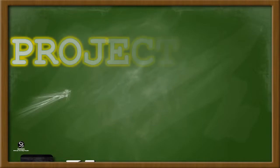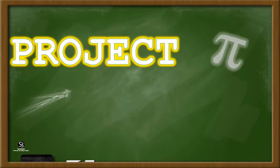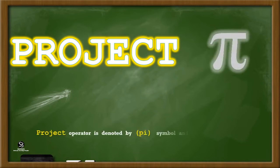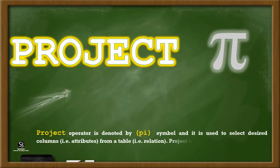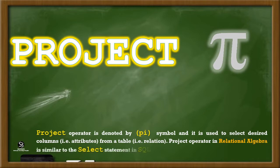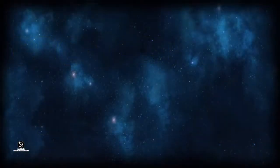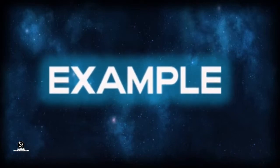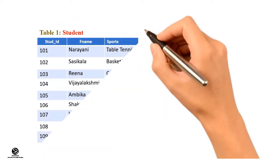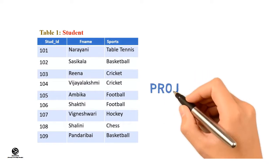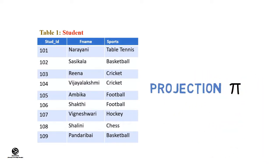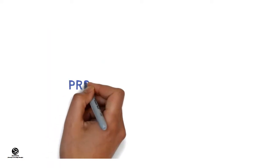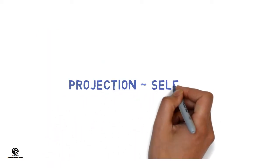Project. The Project operator is denoted by the PI symbol and it is used to select desired columns, i.e. attributes, from a table, i.e. a relation. The Project operator in Relational Algebra is similar to the SELECT statement in SQL.